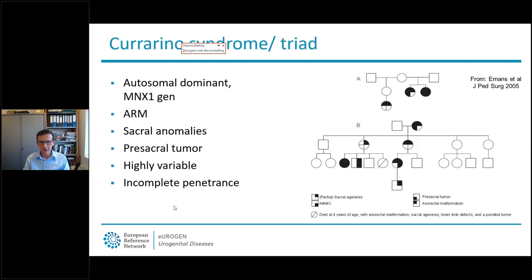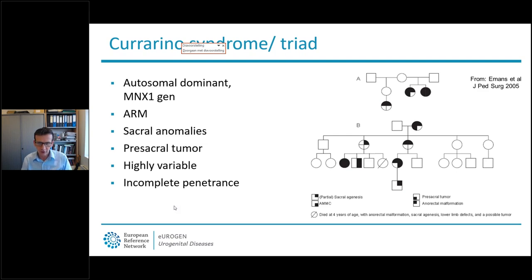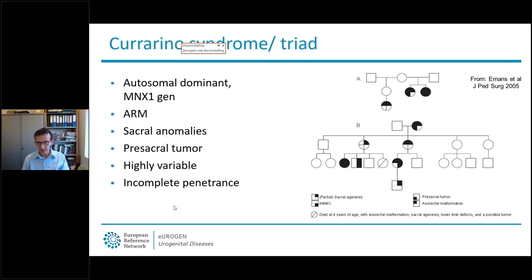The second autosomal dominant syndrome with a highly variable presentation is the Currarino syndrome. Classically these patients have the triad of anorectal malformation, sacral anomalies, and a presacral mass. This syndrome may not have been recognized in family members as they may have only minimal abnormalities — in some family members the only symptom might be chronic constipation or a sacral anomaly that may have gone unnoticed, and occasionally family members carrying the mutation may not have any symptoms at all.